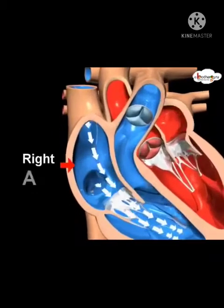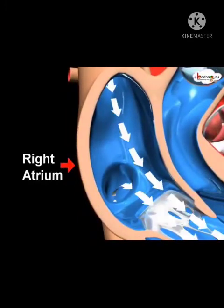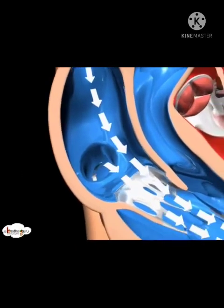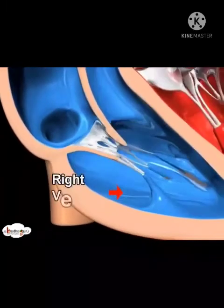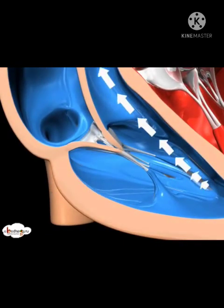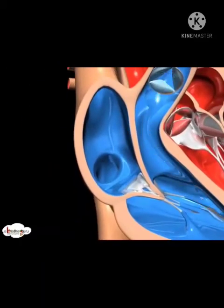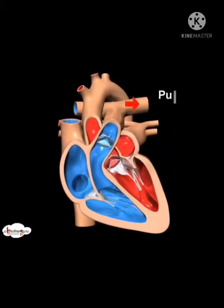The right upper atrium receives deoxygenated blood from the whole body, which is pumped into the right ventricle below, and it sends the blood to the lungs for oxygenation via the pulmonary artery.